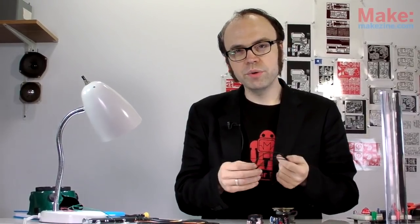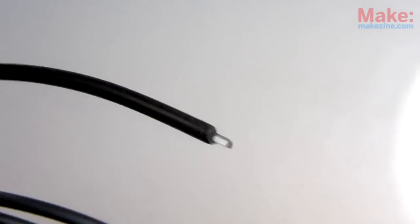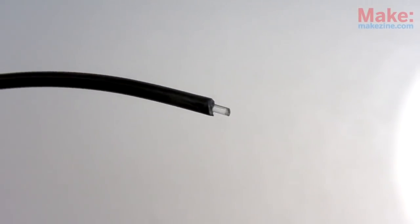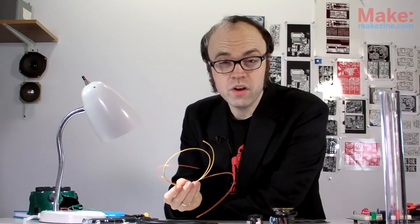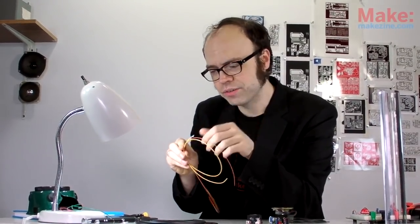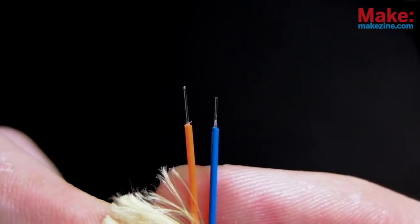For short distances, we can use a plastic fiber core, as is used in this kit here. But to maintain signal integrity over very long distances at high frequencies, we need to use a core made from very pure glass.